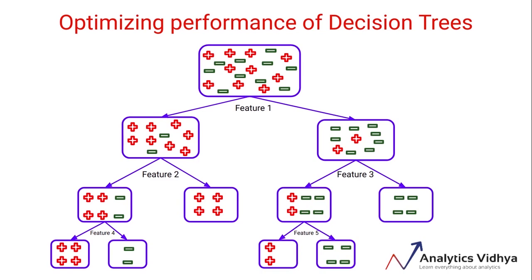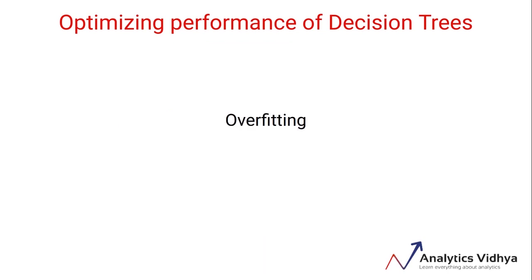Hence we can say that decision trees can lead to overfitting. We've already seen overfitting before. If you want to review your concept of overfitting, I recommend you watch the video that we covered earlier and then move ahead with this course. As I've mentioned, decision trees can achieve a perfect score on training data, but the performance on validation data or the test data might not be as good. In fact, there's a good chance that in the real world it will not be as good.